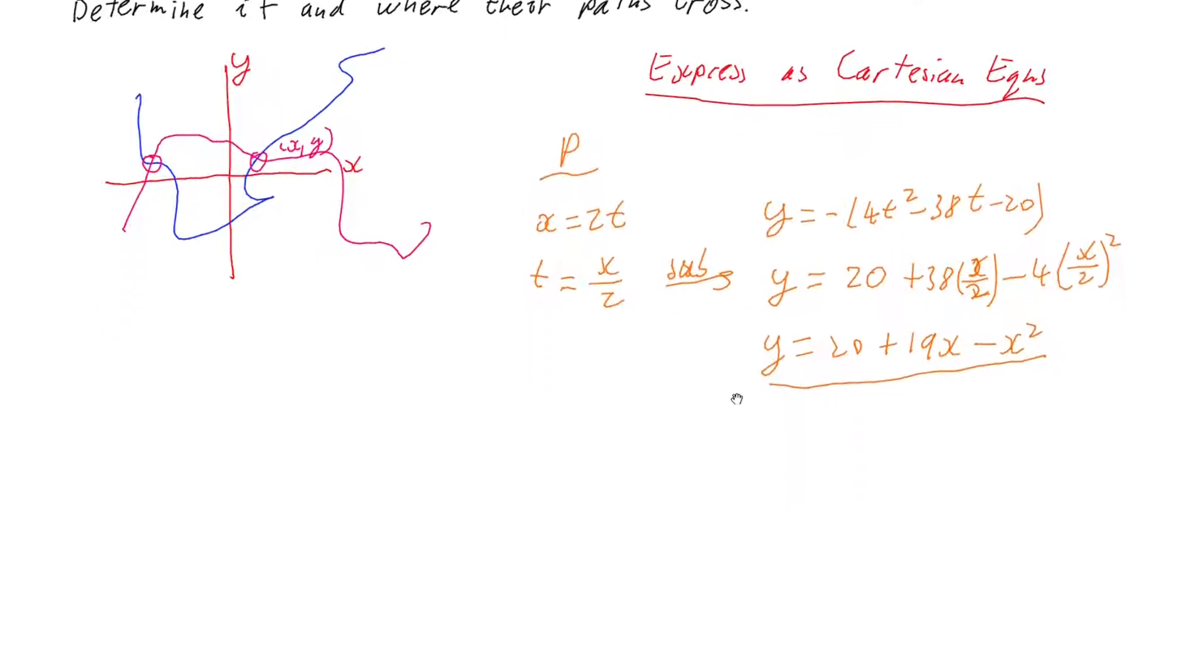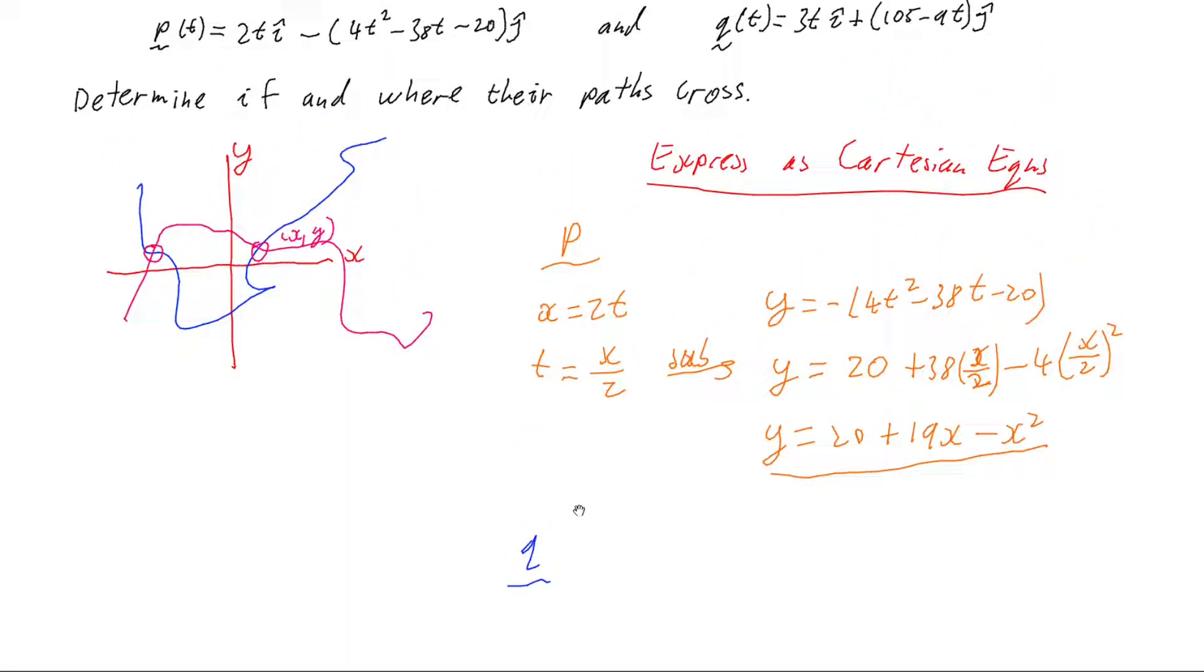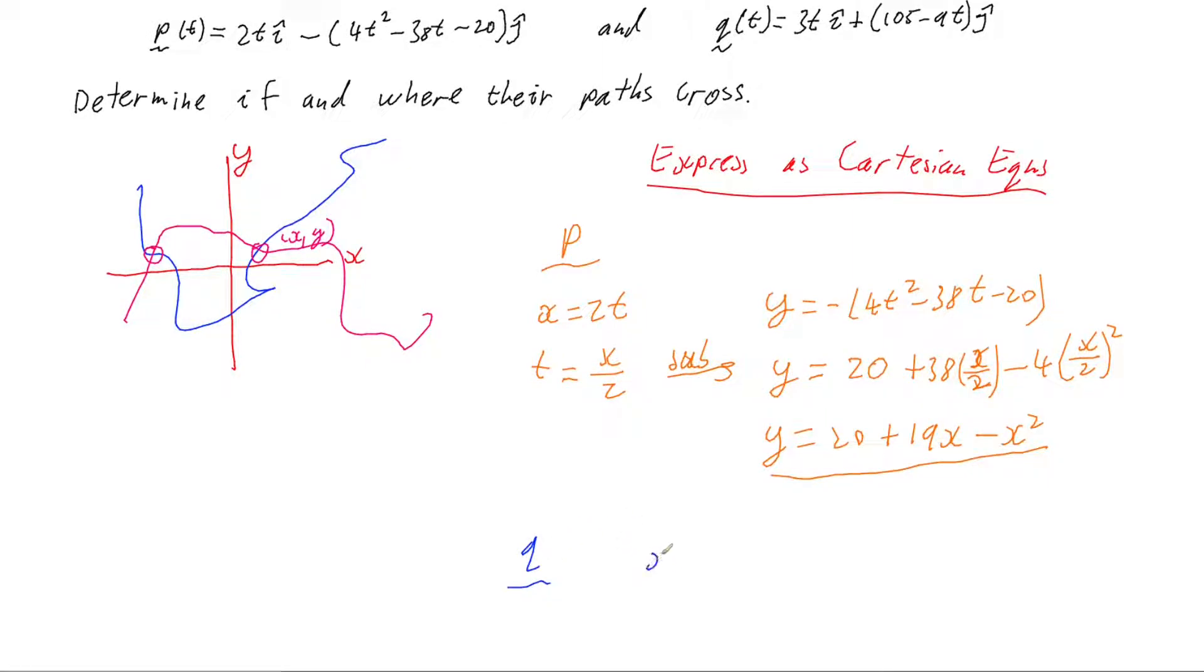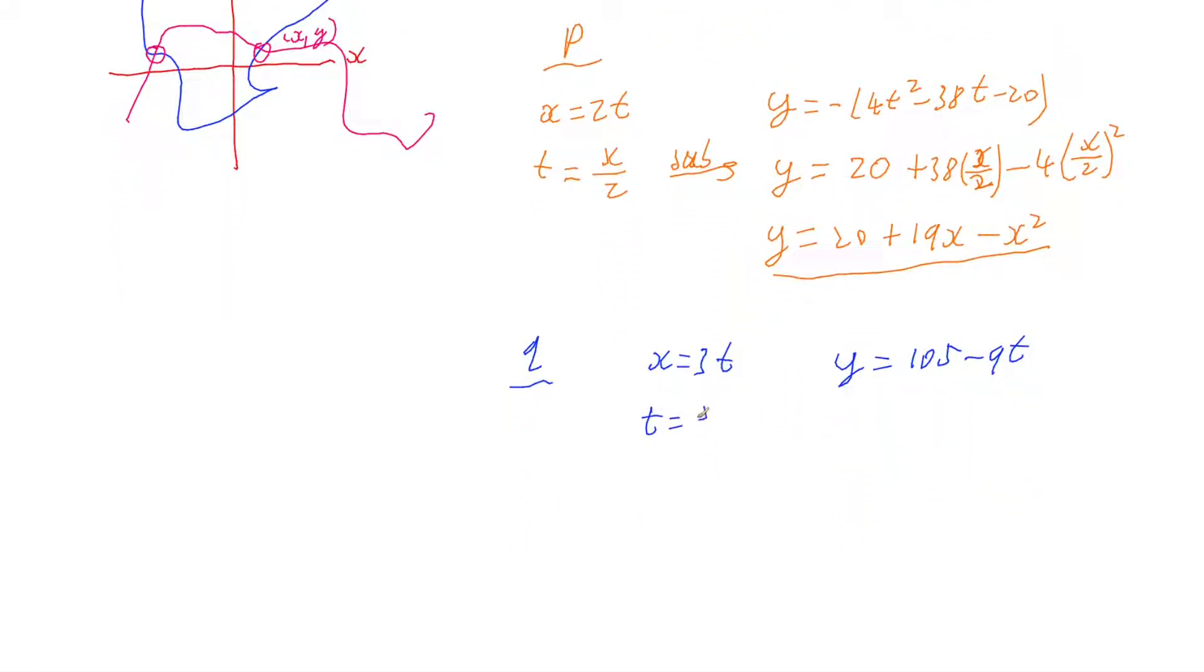Now we just need to do the same for our other particle. So if we have a look at particle q, for q's particle we have that x equals 3t and we have that y equals 105 minus 9t.